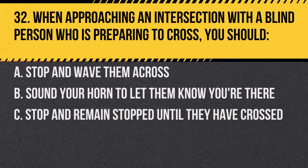Question 32. When approaching an intersection with a blind person who is preparing to cross, you should: a. Stop and wave them across. b. Sound your horn to let them know you're there. c. Stop and remain stopped until they have crossed. Answer: c. Stop and remain stopped until they have crossed. Drivers must always yield to blind pedestrians.